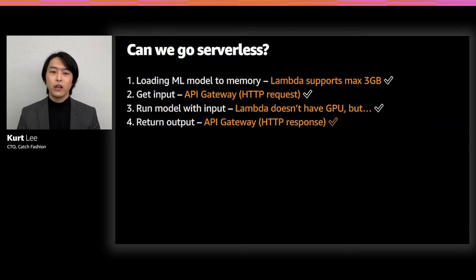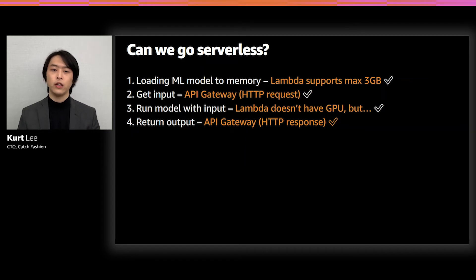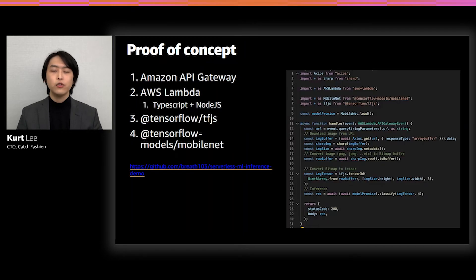Can we actually run the inference in Lambda? Lambda doesn't really have a GPU, but unless you need truly real-time inference like video processing, having a CPU is more than enough for most of the processing you want to run. And for returning output — returning the prediction — API Gateway supports all sorts of HTTP responses, even including binary responses. So that was handled too.